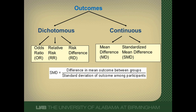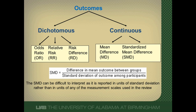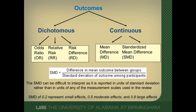This formula shows us how we can calculate the standardized mean difference: we take the difference in mean outcomes between the groups and divide it by the standard deviation. This can be a little difficult to interpret because it's reported in units of standard deviation, not the units of the measurement scales used in the studies. For example, a standardized mean difference of 0.5 means the average effect of treatment across studies is one half of a standard deviation unit. A standardized mean difference of 0.2 or less is a small effect; 0.5 is a moderate effect; 0.8 or greater is a large effect.